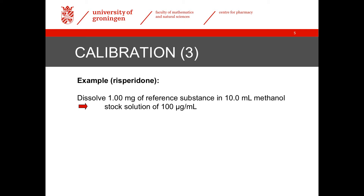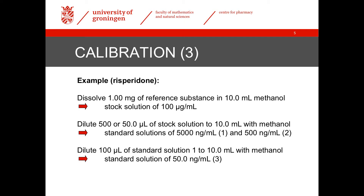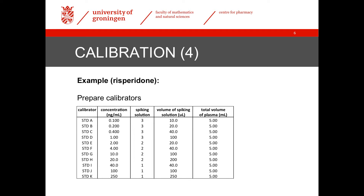Let's have a look at an example. For risperidone, 1 mg of the reference substance is dissolved in 10 ml of methanol to produce a stock solution of 100 micrograms per ml. This stock solution is further diluted to so-called standard solutions of lower concentrations, in this case 5, 50, and 500 nanograms per ml. Calibrators with concentrations between 0.1 and 250 nanograms per milliliter are prepared by adding small volumes of these standard solutions to blank plasma, as shown in this table.